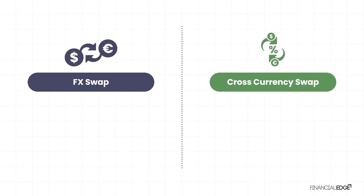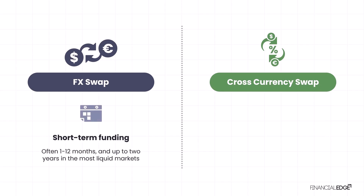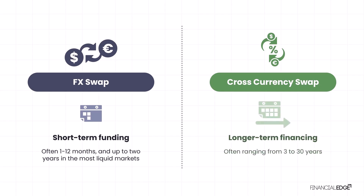While both FX swaps and cross currency swaps facilitate currency conversion, they serve different purposes due to their distinct time horizons. FX swaps are primarily used for short-term funding needs, often one to twelve months and typically up to two years in the most liquid markets, while cross currency swaps are more commonly used for longer-term financing, often ranging from three to thirty years.